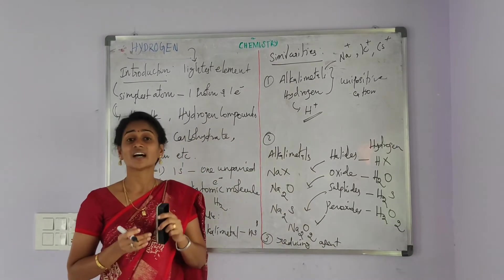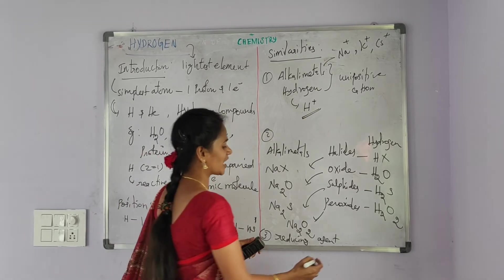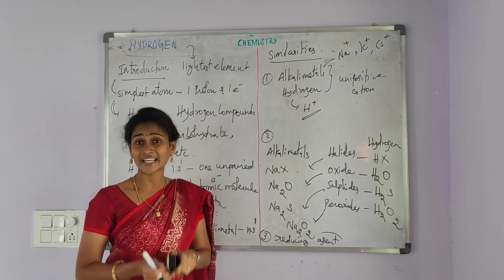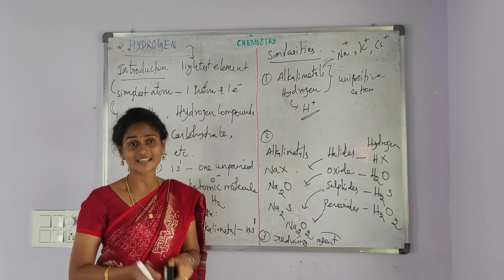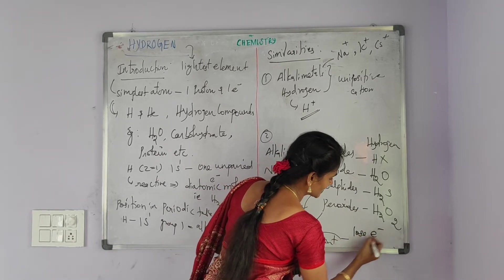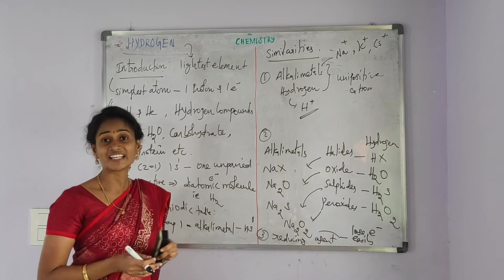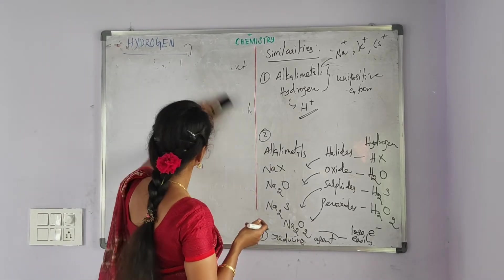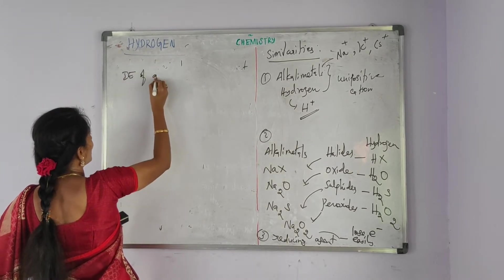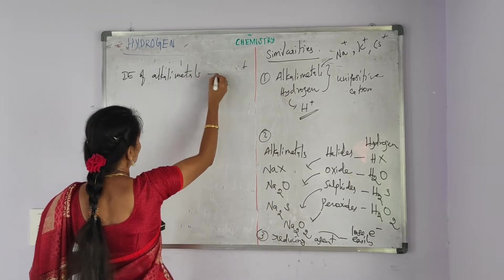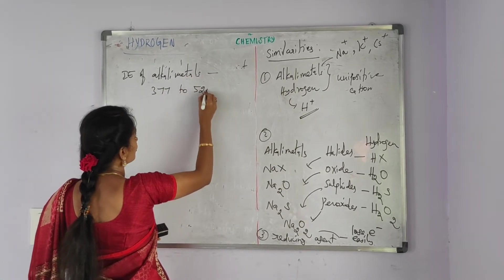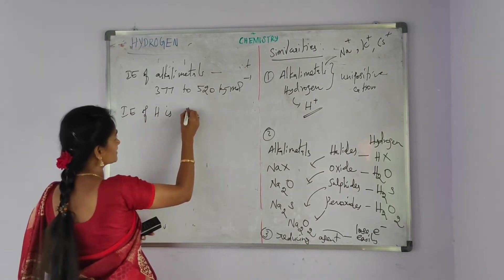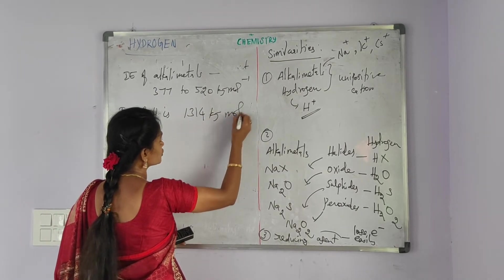Like alkali metals, hydrogen also acts as a reducing agent. Any element that has the tendency to lose electrons easily will act as a reducing agent. So hydrogen and alkali metals both act as reducing agents. The ionization energy of the alkali metals ranges from 377 to 520 kJ mol⁻¹.